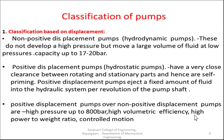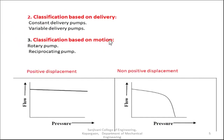Based on delivery, pumps are classified as constant delivery pumps and variable delivery pumps. Based on motion, they are classified as rotary pumps and reciprocating pumps.